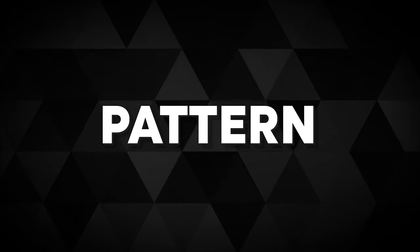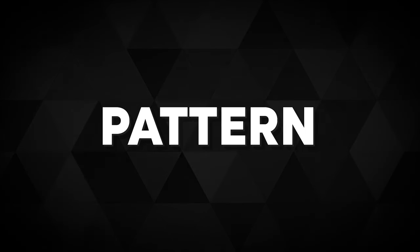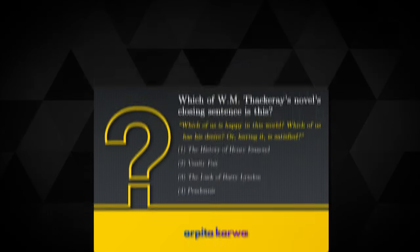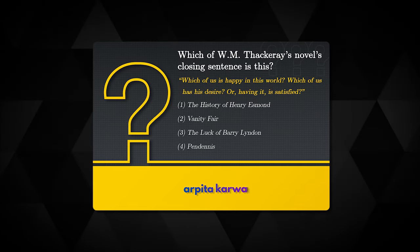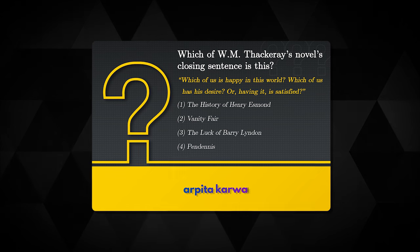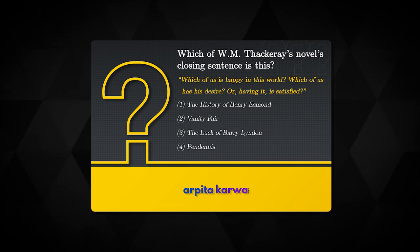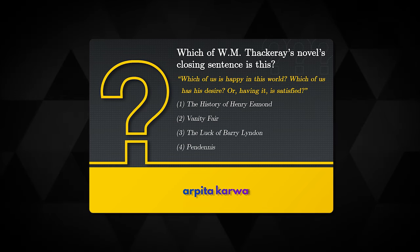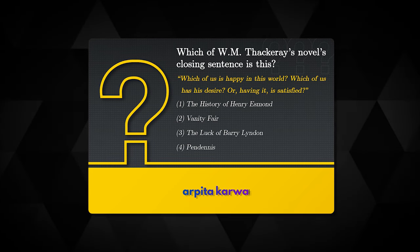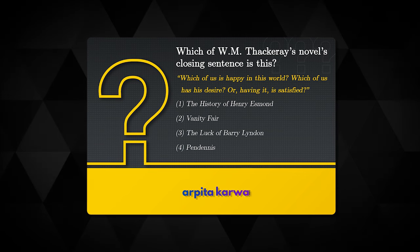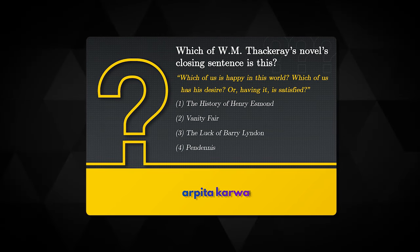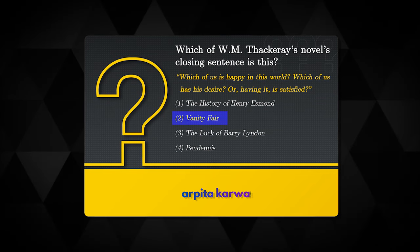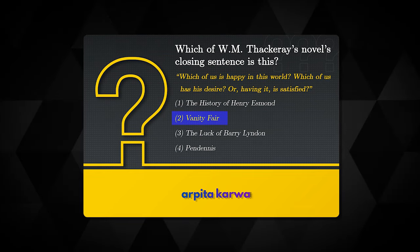To understand the pattern of such questions, let us look at one of the previous year questions from the UGC Net English exam: Which of W.M. Thackeray's novel's closing sentence is this? 'Which of us is happy in this world? Which of us has his desire? Or having it, is satisfied?' The correct answer is Vanity Fair. These are the kind of questions we have seen in past exams.